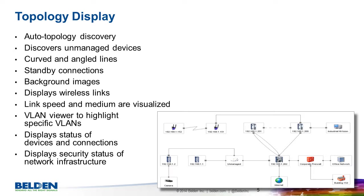Industrial networks use standardized but uncommon network redundancy protocols. Industrial HiVision can visualize the redundant connections using dashed lines. Zigzag lines are used to display wireless links. Link speed, as well as connection mediums such as copper or fiber, is also visualized. Supported devices are displayed using an accurate device icon, which makes it easy to identify a device. The VLAN viewer displays only devices and connections in a specific VLAN. The map itself is active and displays the warning or error status of devices and connections using colors, which can be defined by the administrator.